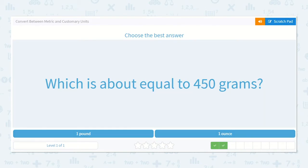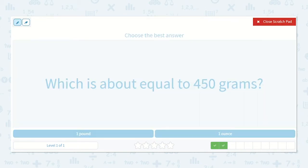Which is about equal to 450 grams? One pound or one ounce? Well, I know one ounce is about 28 grams. So it would make sense that one pound, which is 16 ounces, would be about 450 grams.